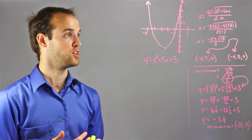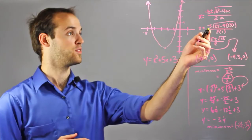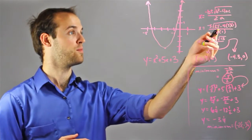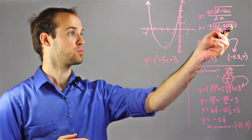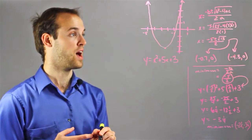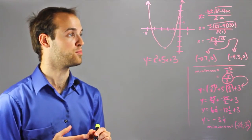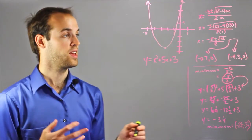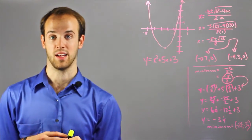I'm going to plug in my values, which I get negative 5 plus or minus the square root of 25 minus 4 times 3 times 1, which simplifies to negative 5 plus or minus root 13 over 2.